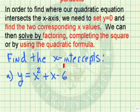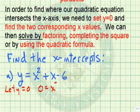We want to find the x-intercept of y equals x squared plus x minus 6. Notice we let y equals zero, so we have zero equals x squared plus x minus 6.